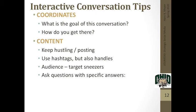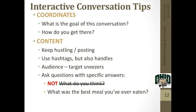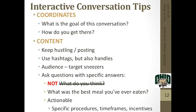Make sure we're asking a question with a specific answer — not 'what do you think,' but something very specific like 'what was the best meal you've ever eaten' at the end of a post about cooking. Make sure it's actionable and give them specific ways: comment below, send a DM, or use this hashtag. Give them a timeframe — do it in the next two days. And then incentives or benefits — it doesn't have to be a $5 gift card, but we can say your information might appear in a story that we're doing.